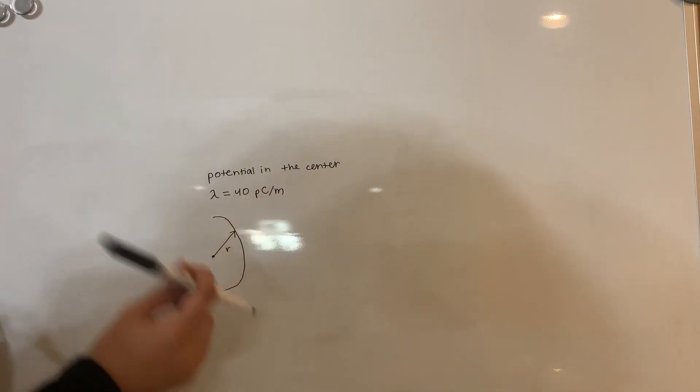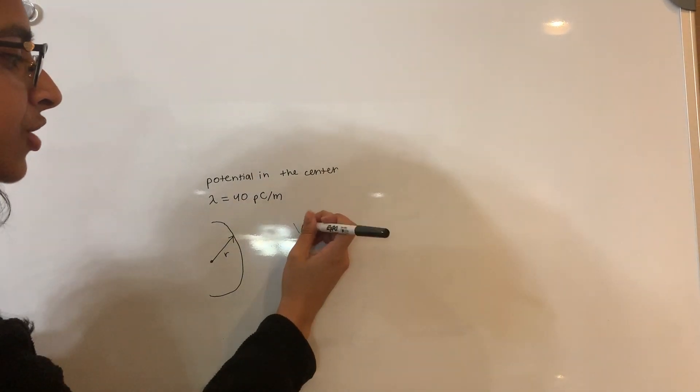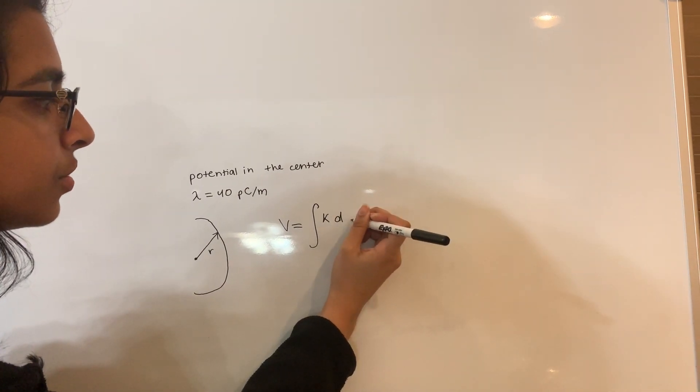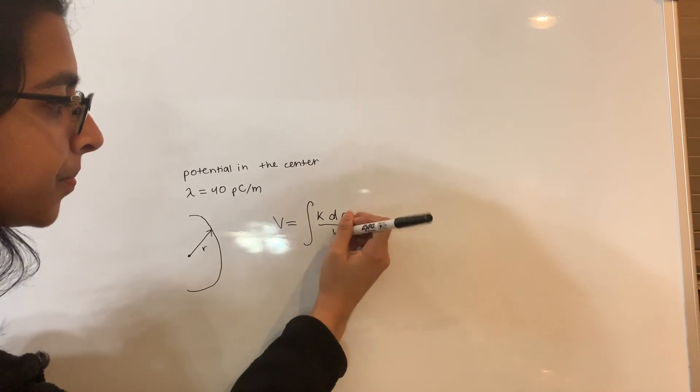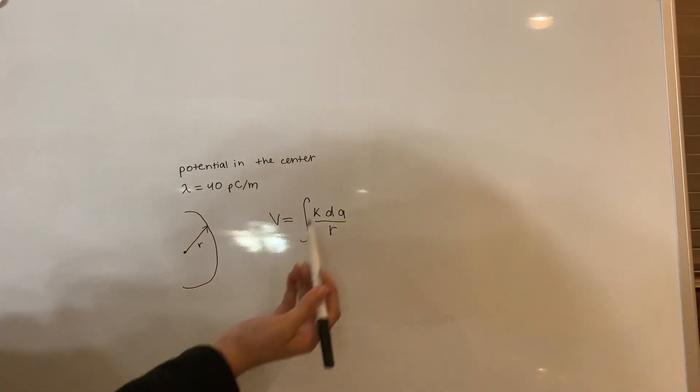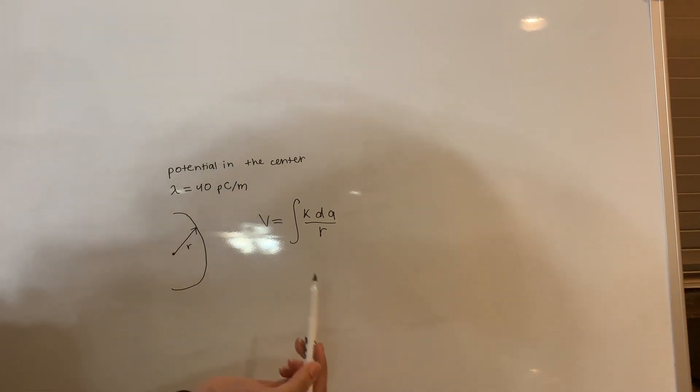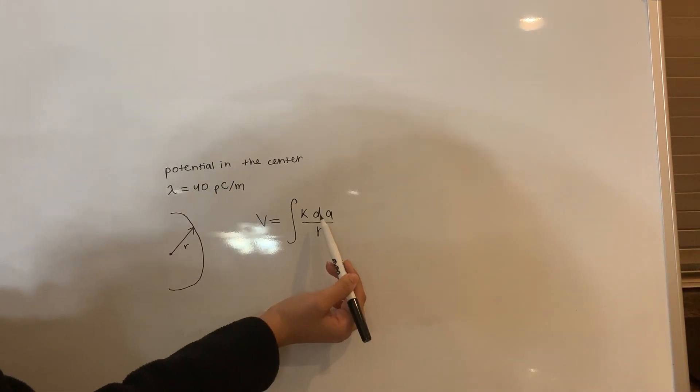The way we're going to set this up is using the electric potential equation. V is going to equal the integral of k dq over r. So we just have to integrate this across this entire semicircular ring. First we're going to find out what dq is.